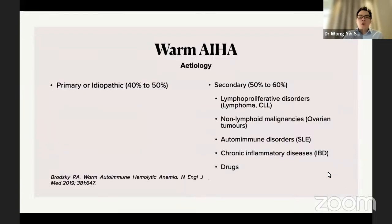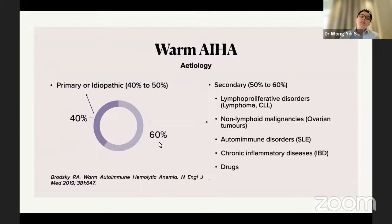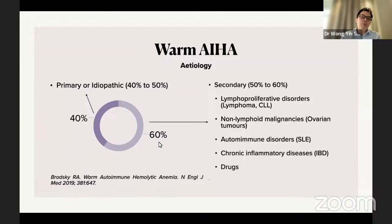Warm AIHA is not necessarily a disease per se — it has an underlying etiology. It can be primary or idiopathic in 40–50% of cases, but secondary causes account for about 60% of cases. These include lymphoproliferative disorders such as lymphoma or chronic lymphocytic leukemia, non-lymphoid malignancies such as ovarian tumors, autoimmune diseases like SLE, rheumatoid arthritis, and Sjögren's syndrome, chronic inflammatory diseases like inflammatory bowel disease, and certain drugs.